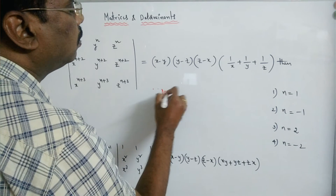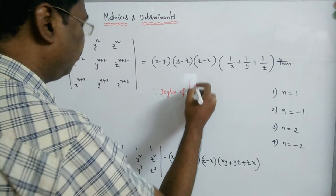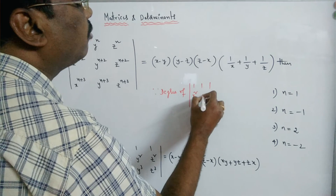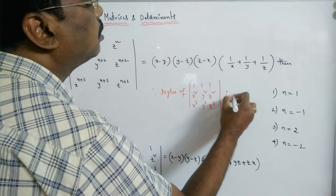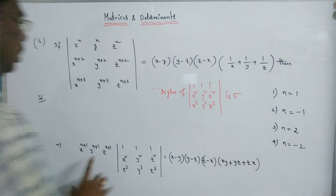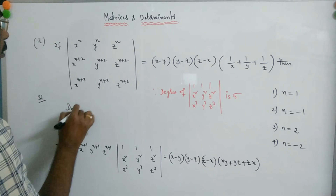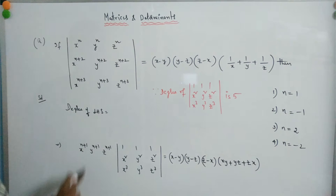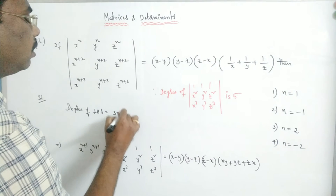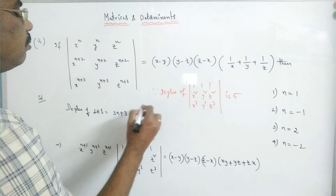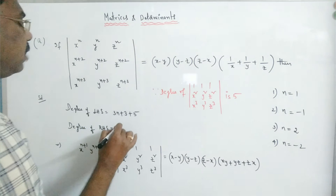Now the degree of LHS and degree of RHS: the degree of the determinant of 1, 1, 1; x², y², z²; x³, y³, z³ is 5. The degree of LHS is equal to — here each entry has degree n+1, so overall 3(n+1) = 3n+3, plus the degree of this factor which is 5, giving 3n+8. Degree of RHS is equal to 5.